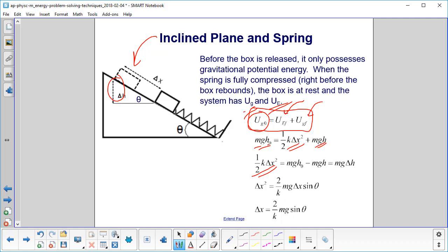Multiply through by 2, divide by k, and take the square root. And here is our delta x: 2 over k, mg sine theta.